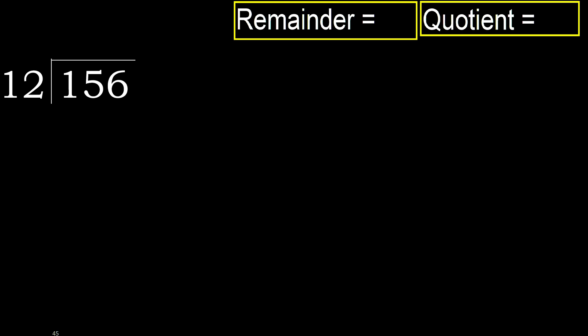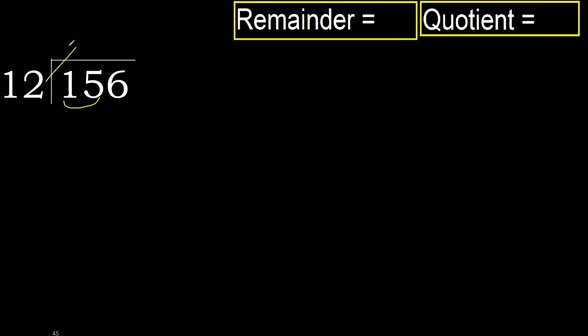156 divided by 12. 1 is less, therefore next. 15 is not less, therefore with 15. 12 multiplied by which number is nearest to 15?